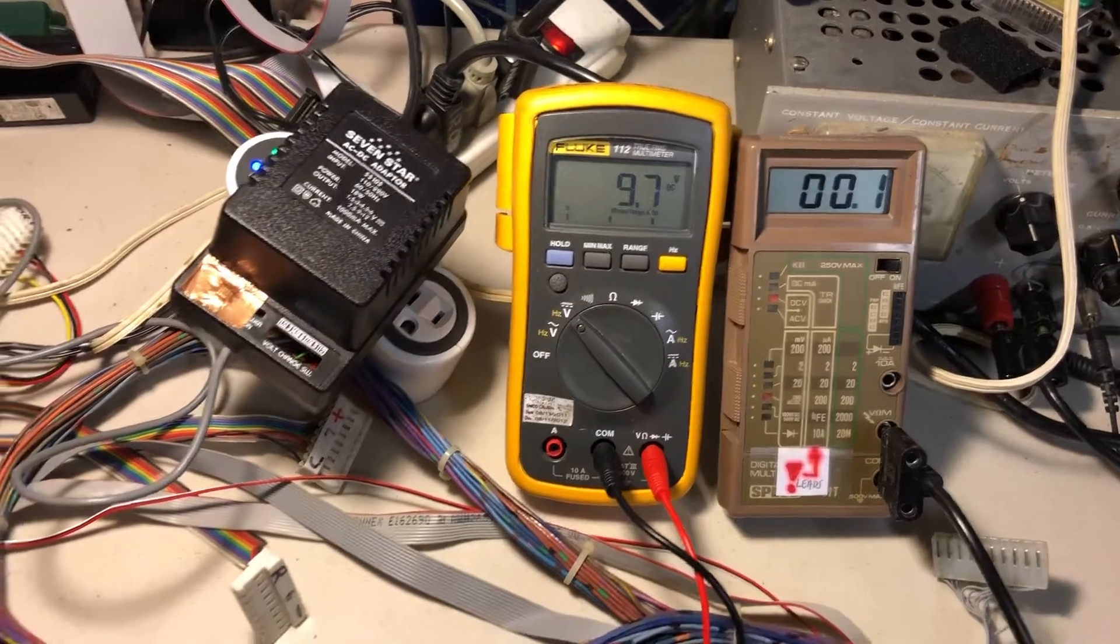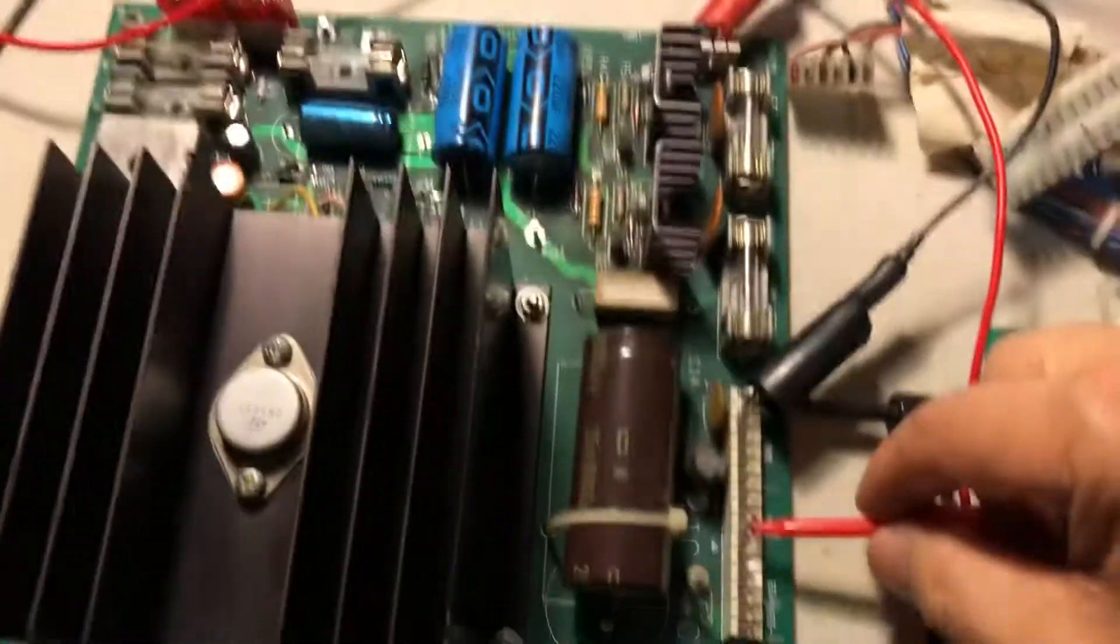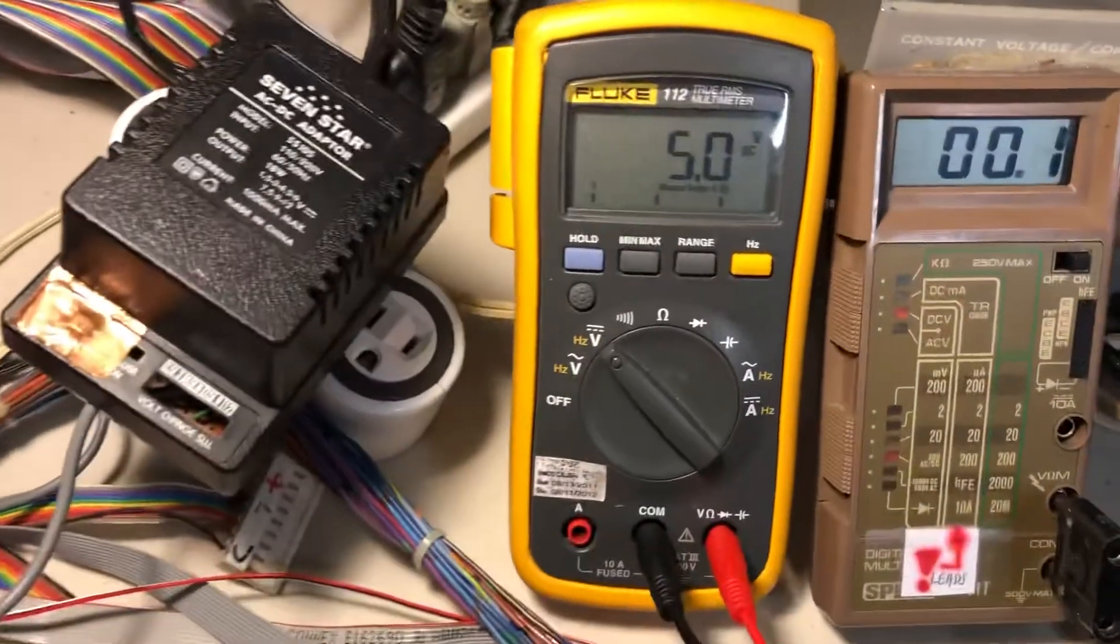Positive is 9.7. The regulated voltage is 5 volts plus 5.0.